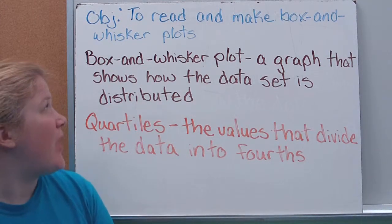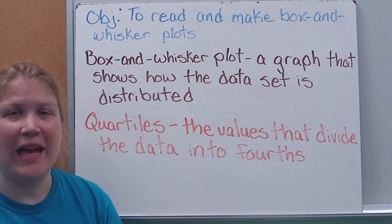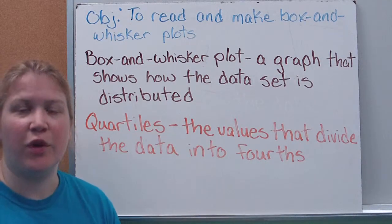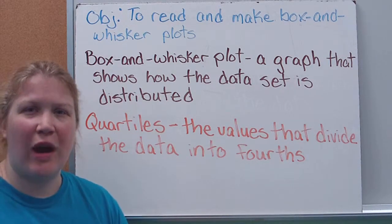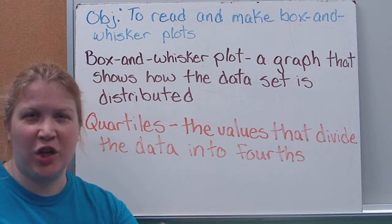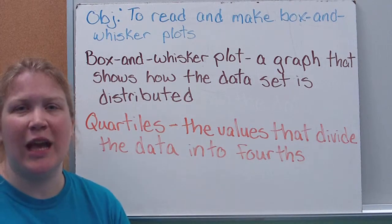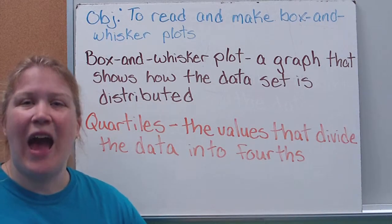So a box and whisker plot is a graph that shows how the data set is distributed. It's going to break it into quartiles or quarters, into fourths, and it'll visually show you on a graph. So you can kind of see the bigger the section, the more data would be included within that area. It just kind of helps you visually look at how the data would fall.